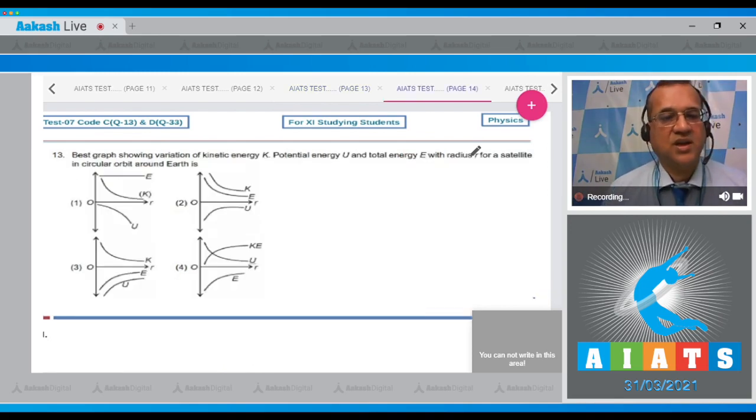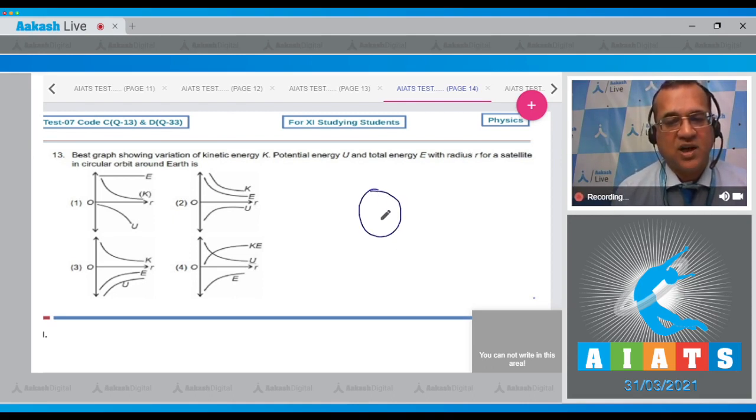Question number 13 is the best graph showing the variation of kinetic energy k, potential energy u, and total energy e with radius r for a satellite in circular orbit around the earth. Now dear student, you know that if this is a satellite moving around the earth...